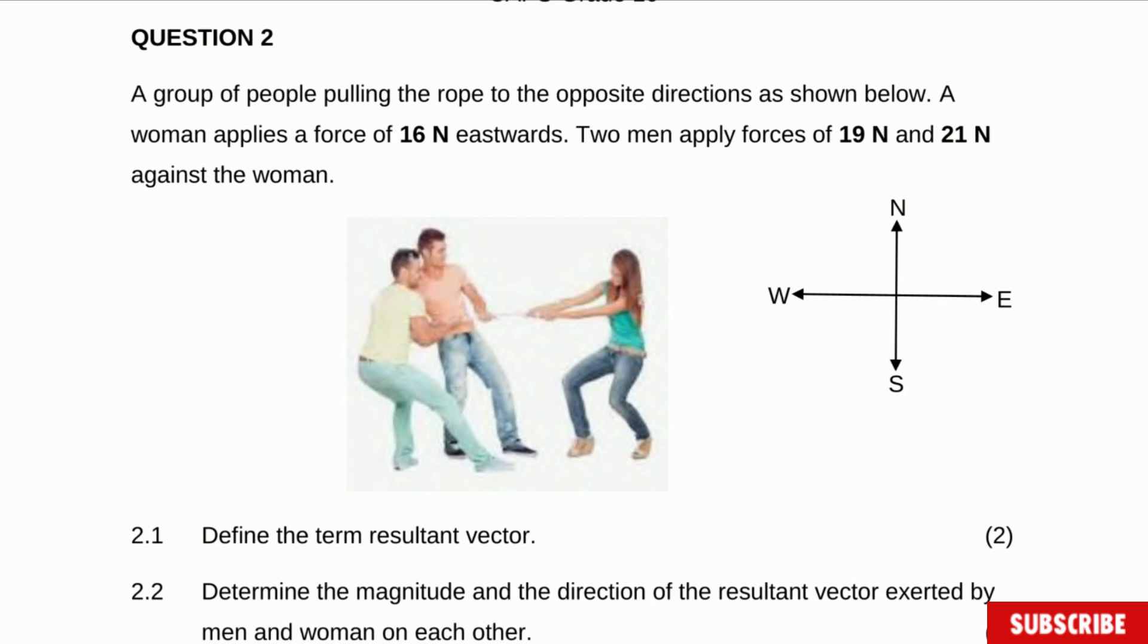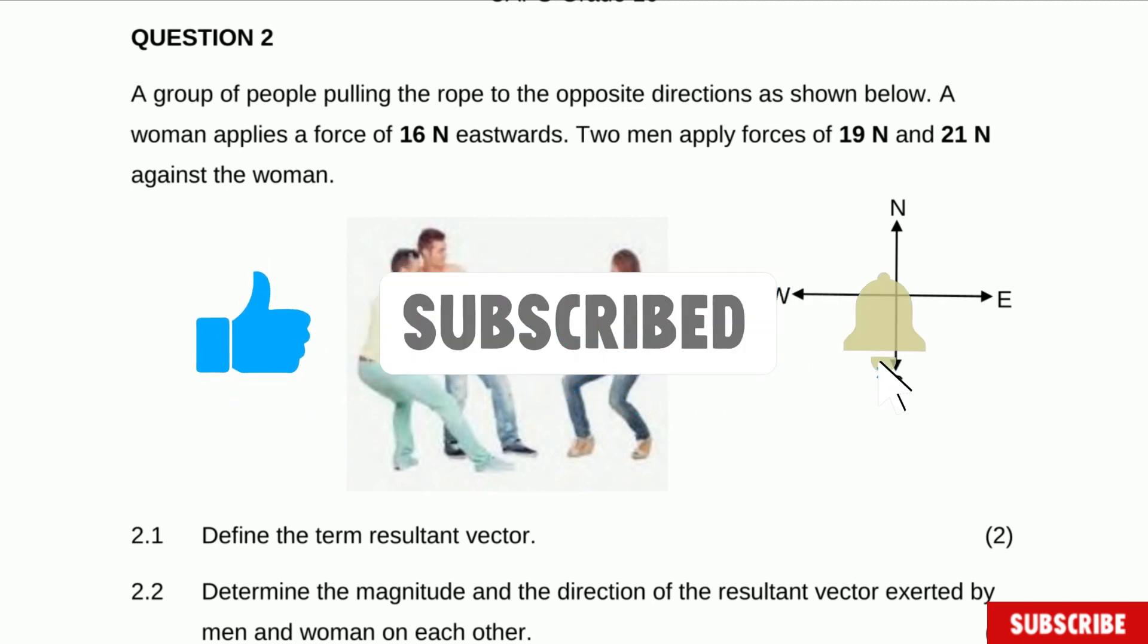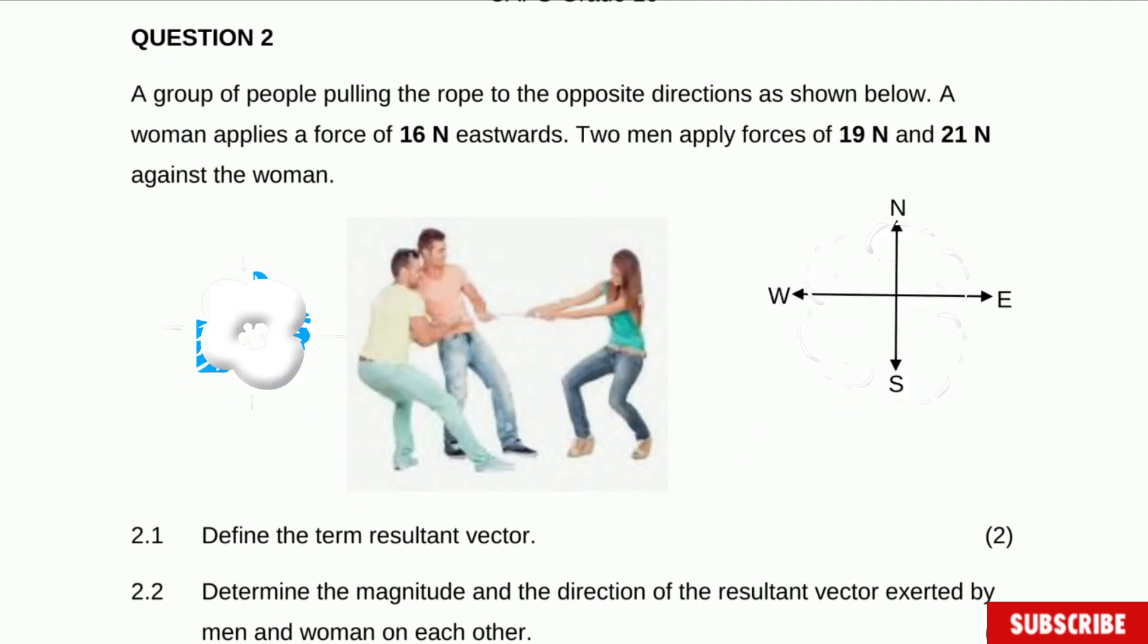This question was done in the Eastern Cape in 2022 and it's a good question so let's look at it. I'm going to leave the question in the description below so you can answer the question before watching the video. The question says a group of people pulling the rope to the opposite directions as shown below. A woman applies a force of 16 N eastward.